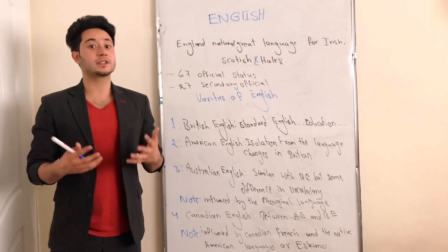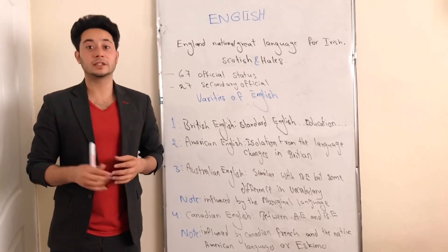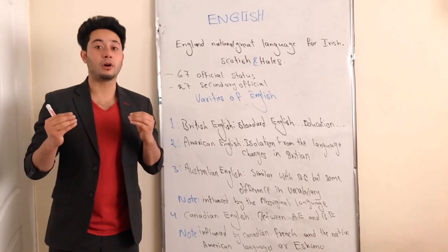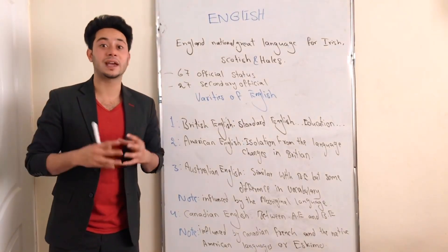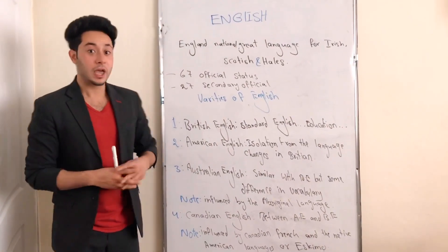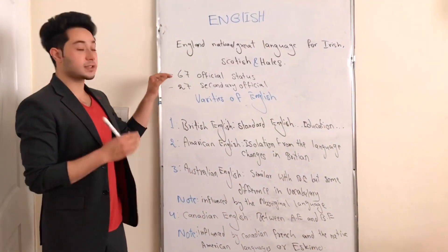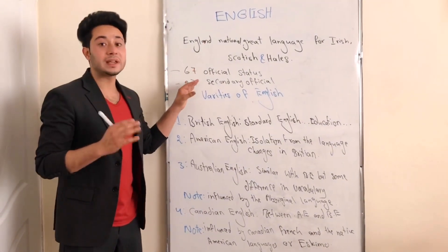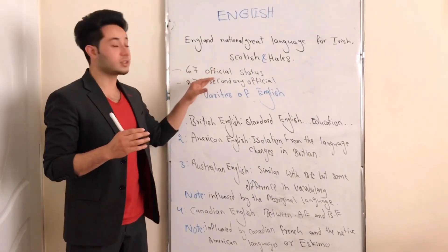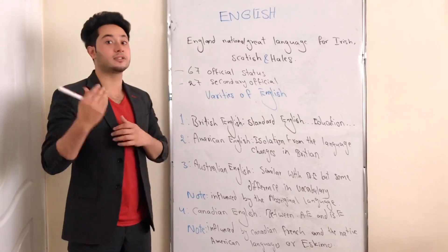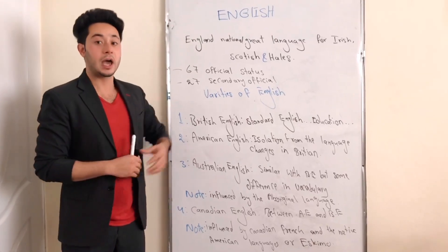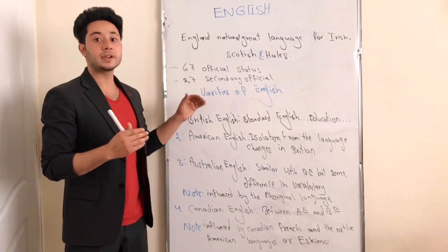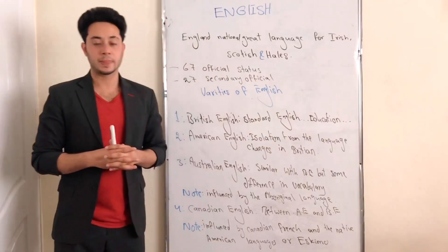What is English? English is a language that in 94 countries, people are using English as the first or the second language. In 67 countries, they are using English as the official status, meaning they are using English as the first language. And in the remaining 27 countries, people are using it as the secondary official language.